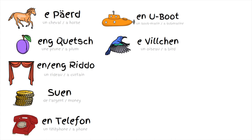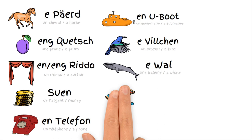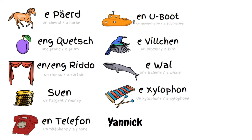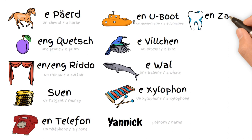W — e waal. X — e xylophon. Y — Jannik. Z — en zant.